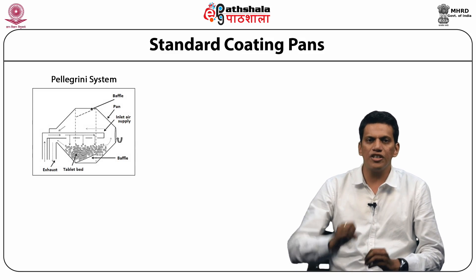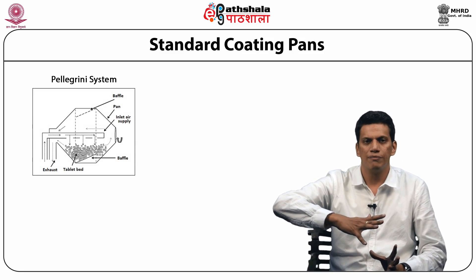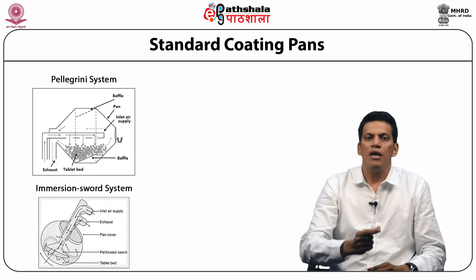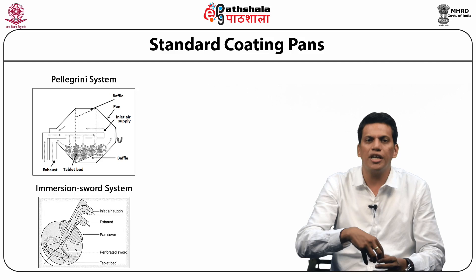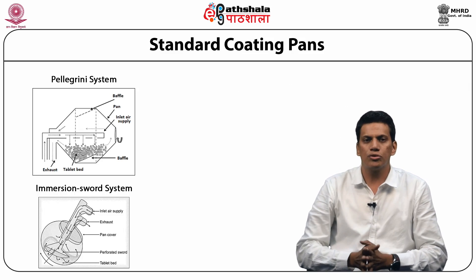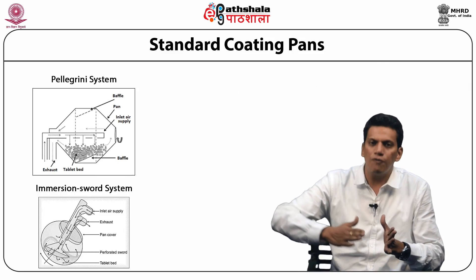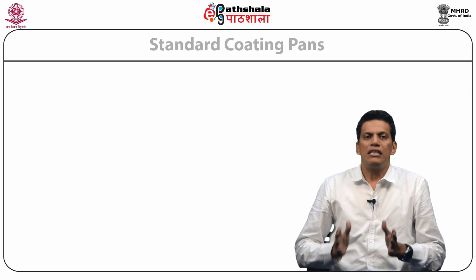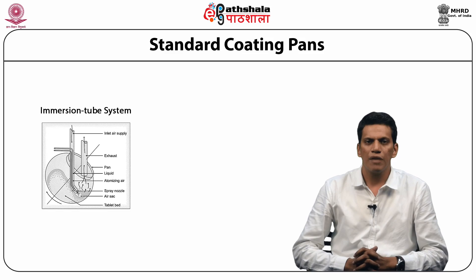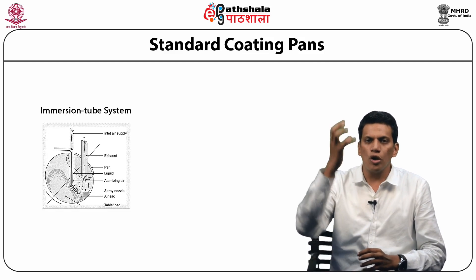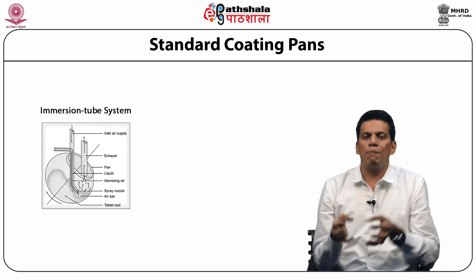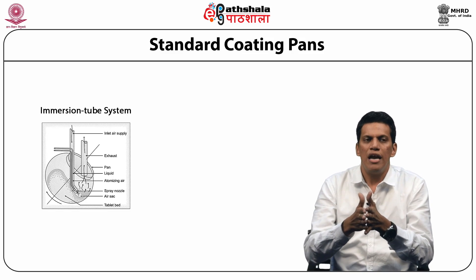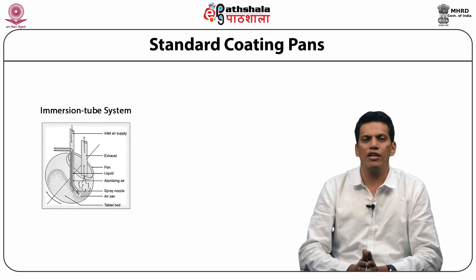The Pellegrini system consists of a diffuser that distributes the drying air and baffles in the pan for efficient mixing. The immersion sword system consists of a sword inserted into the tablet bed, through which drying air is introduced, resulting in movement of drying air through the tablet bed, intimate mixing, and efficient drying. The immersion tube system includes coating solution and drying air applied simultaneously through the immersed tube, resulting in intimate mixing and efficient drying of the tablets.